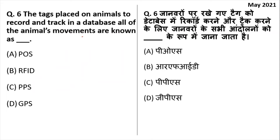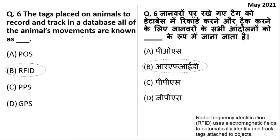The tags placed on animals to record and track them in a database are known as RFID. The right answer is option B. RFID stands for Radio Frequency Identification. These tags are used to see where animals are and sometimes to count the number of animals in a place.